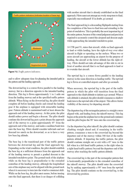The upwind leg is a course flown parallel to the landing runway in the same direction as landing traffic. The upwind leg is flown at controlled airports and after go-arounds. When necessary, the upwind leg is the part of the traffic pattern in which the pilot will transition from the final approach to the climb altitude to initiate a go-around. When a safe altitude is attained, the pilot should commence a shallow bank turn to the upwind side of the airport. This allows better visibility of the runway for departing aircraft.